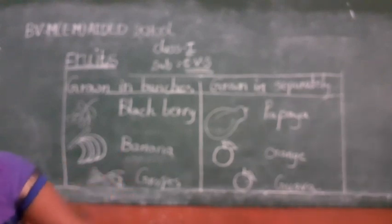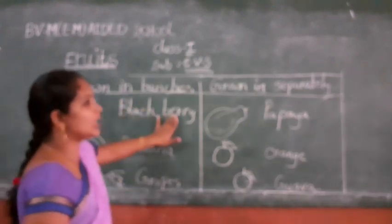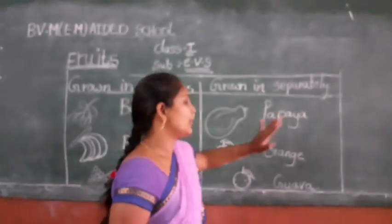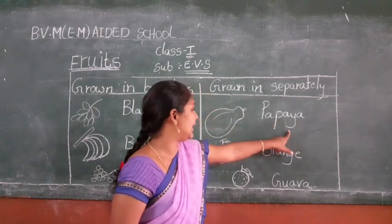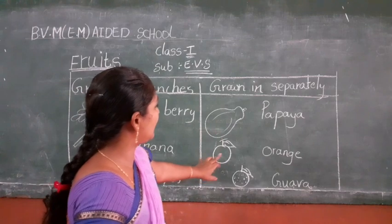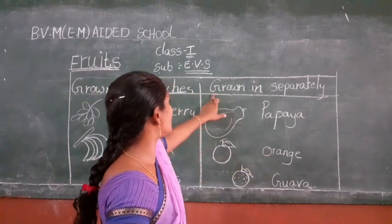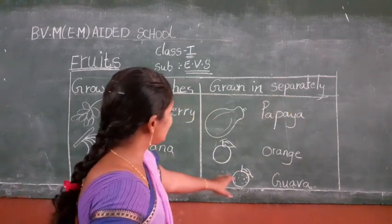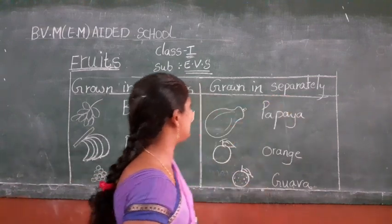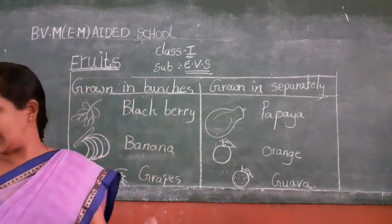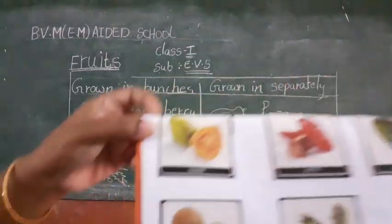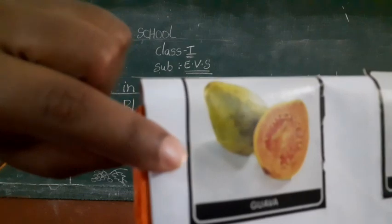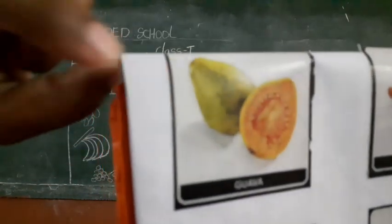Okay, next. Which fruit is grown in bunches? Blackberry is grown in bunches. Now, we learn apple grows separately. So, which fruit grows separately? Papaya is grown separately. Next, which fruit is grown separately? Orange. Orange also grows separately. Next, guava also grows separately.